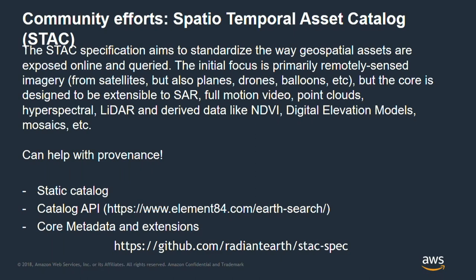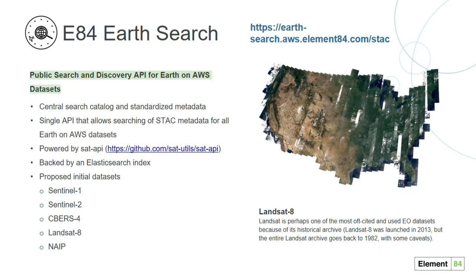We've got a lot of data, but you also need to be able to index it and find it. We're trying to do a better job of making our available data have associated STAC metadata alongside it. If you do that, you can build indexes on top. This is work that Element 84 has done — built on top of sat-api, it's an API that you can query all the publicly available geospatial datasets on AWS that have associated STAC metadata. As we add more STAC metadata to public datasets, they'll show up here. This is managed by Element 84.